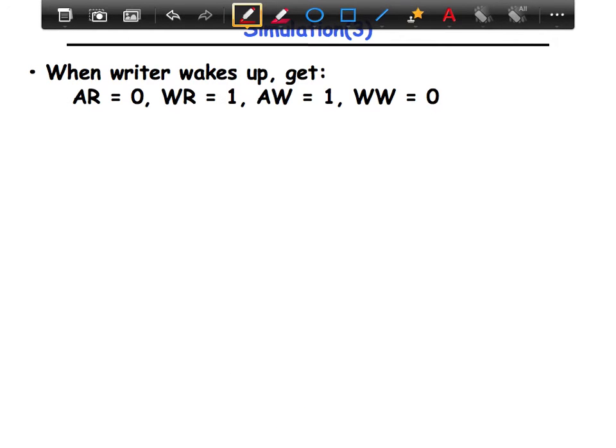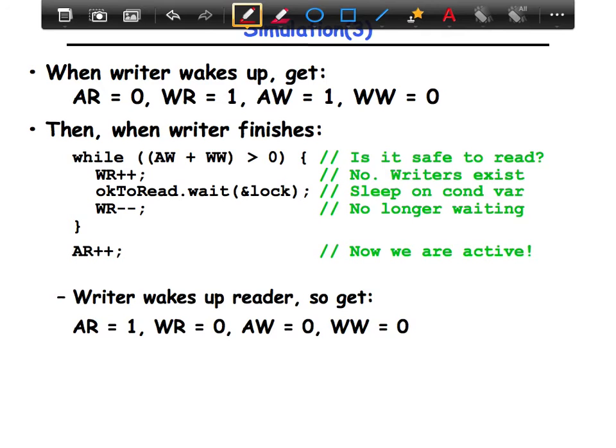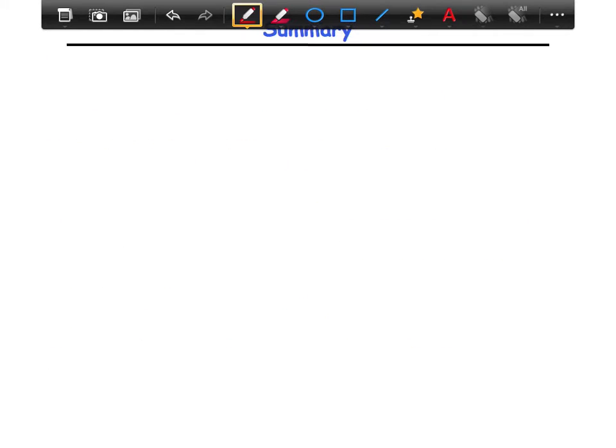Finally, when the writer wakes up, it gets to activate the readers and the writers, but there are no writers in the system, so the waiting reader gets activated and then wakes up from the signal, becomes an active reader, and then finishes up. And when the writer finally completes, we have finished.